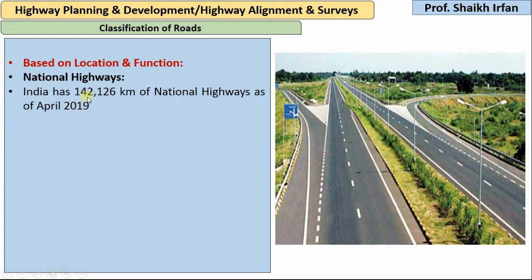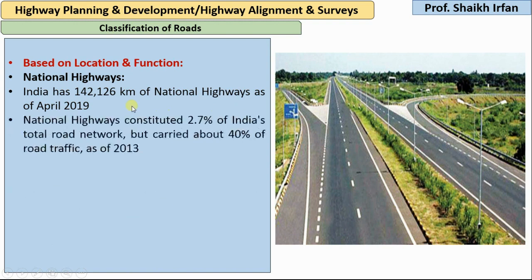India has 1,42,126 km of national highway as of April 2019. National highways constitute only 2.7% of India's total road network, but as per 2013 reports, they carry about 40% of road traffic.